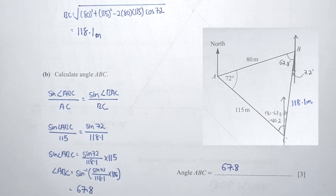For part B, we use the sine rule: sine of angle ABC over AC equals sine of BAC over BC. Remember — whether sine is on top or bottom doesn't matter as long as both sides follow the same arrangement. After filling in the values, angle ABC equals sine inverse of (sine 72 over 118.1 multiplied by 115), giving a final answer of 67.8 degrees.